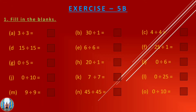Exercise 5b is based on the properties of division. We have learned mainly three properties. The first property is: when we divide a number by the same number, we get 1 as the answer. For example: 3 divided by 3 equals 1; 4 divided by 4 equals 1; 15 divided by 15 equals 1; 6 divided by 6 equals 1; 7 divided by 7 equals 1; 9 divided by 9 equals 1; and 45 divided by 45 equals 1.